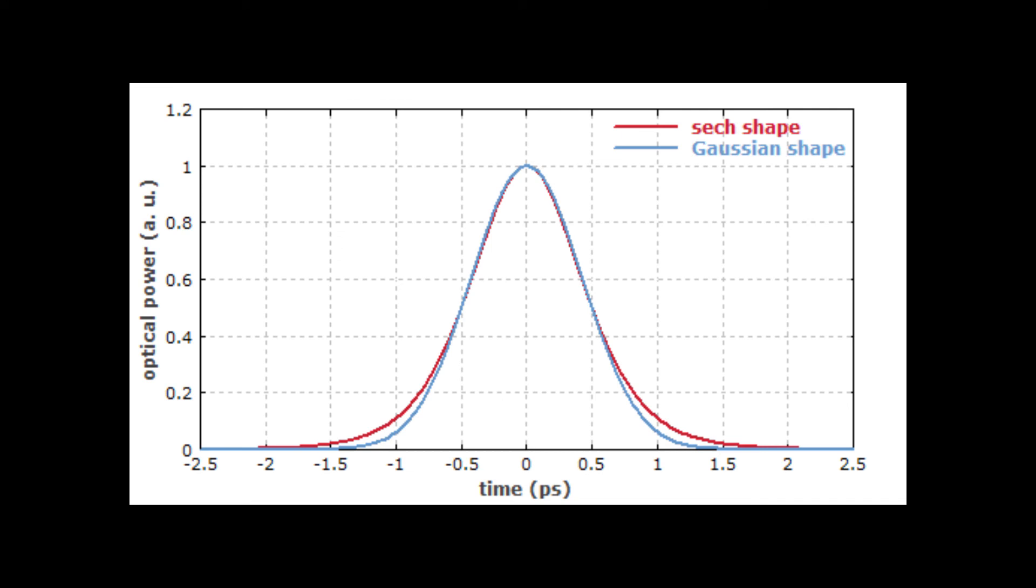There are many shapes the results could look like, but the Gaussian and the sech are the most common.